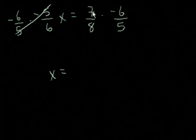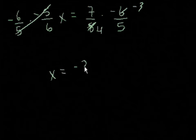And the right-hand side, we have, well, we can divide both the 6 and the 8 by 2. So this becomes negative 3. This becomes 4. 7 times negative 3 is minus 21 over 20.